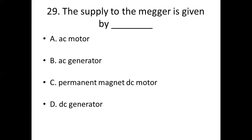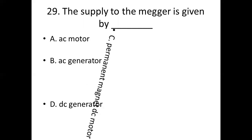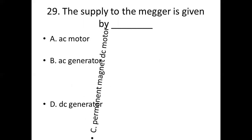29th bit. The supply to the Megger is given by dash. Option A: AC motor. Option B: AC generator. Option C: permanent magnet DC motor. Option D: DC generator. Answer: Option C, permanent magnet DC motor.